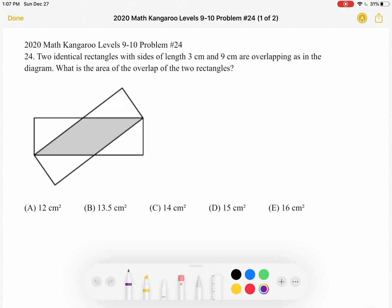The options are: (a) 12 cm², (b) 13.5 cm², (c) 14 cm², (d) 15 cm², or (e) 16 cm². This is the problem.